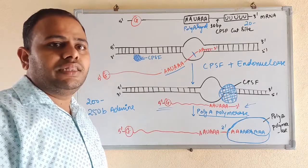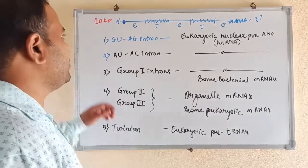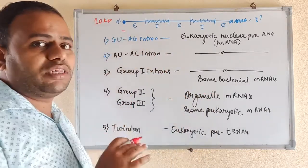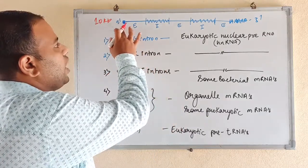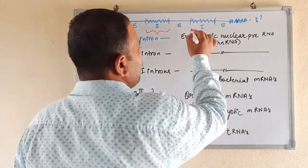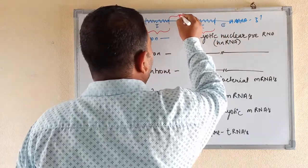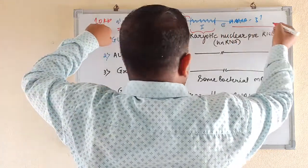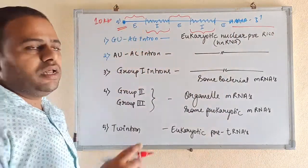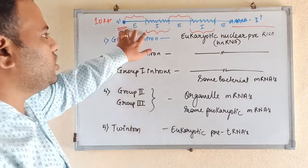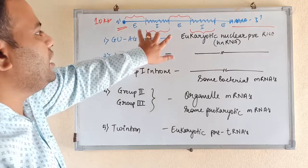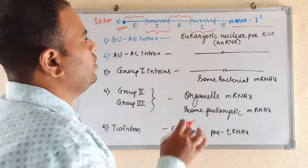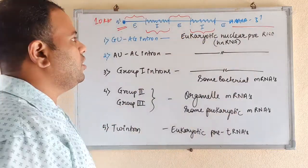Now let us see the third process — splicing. Splicing means removal of unwanted portions present in the mRNA. Every mRNA in eukaryotic cells — this is not present in prokaryotic cells — has certain sequences that do not code for anything, which are nonsense sequences. There are also some sequences that are very important and are part of the gene. In the mRNA, the 5 prime cap and the poly A tail are present, and in between there is the whole gene with certain regions denoted as E for exons — necessary regions that code for the gene — and I for introns, which are intervening sequences present between the exons.